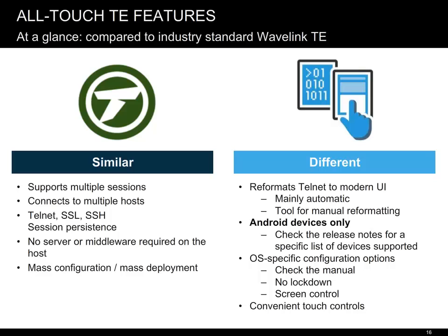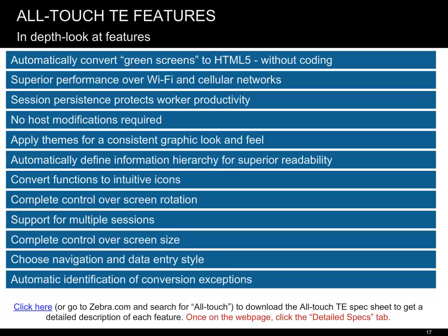Because it only works on Android, it supports fewer configuration options, since the underlying OS and ecosystem are different and many of those are no longer required. For instance, lockdown does not work. On the other hand, AllTouch TE brings extra control over the device screen, like rotation and other features, and convenient touch versus stylus-based controls. Listed here are the AllTouch TE features. Click the link provided here to download the AllTouch TE spec sheet, where you can find a description for each feature.